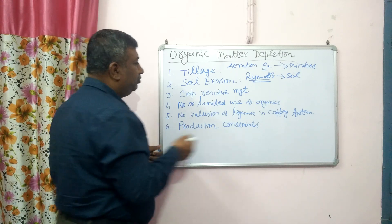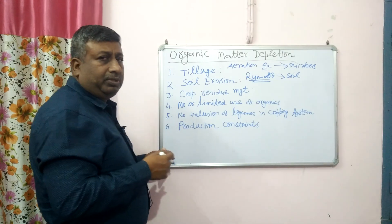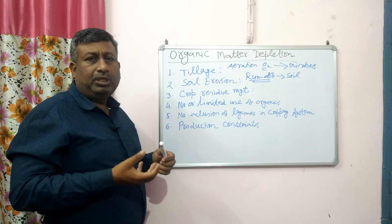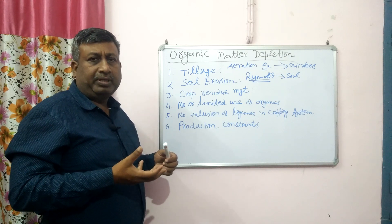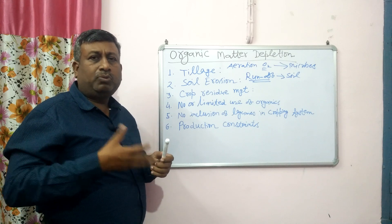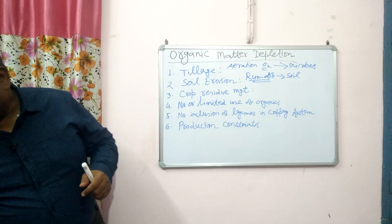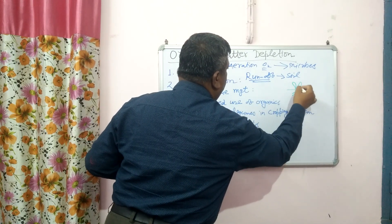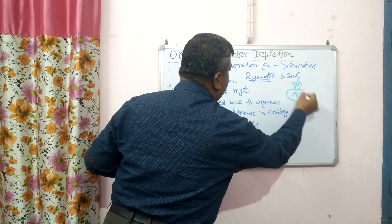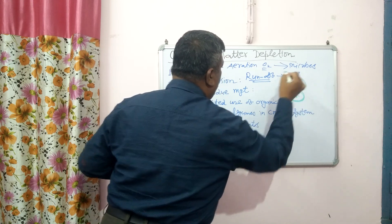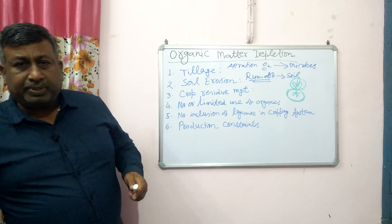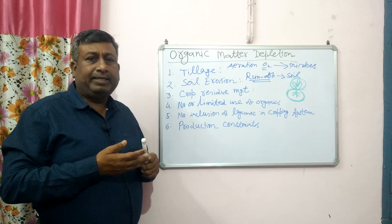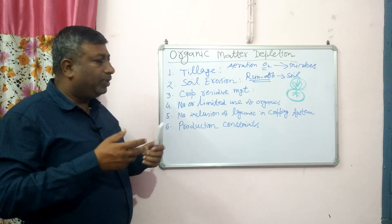Crop residue management is also very important. When we grow a crop for economic purposes, the shoot is harvested and roots remain in the soil, and these roots contribute to the organic matter. If there is more root biomass, there is more organic matter in the soil. The roots contribute to the organic matter, but the top shoot is used for different economic purposes — we use the grain, but leaves, stems, and branches are also present.